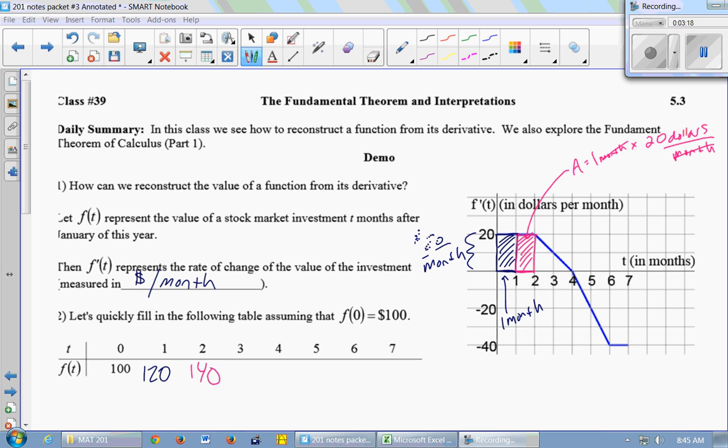Look at what happened between month 2 and month 3. What is the area under the curve there? 15. Because this little chunk here is 10, 1 by 10.